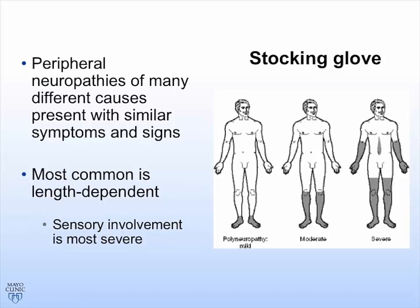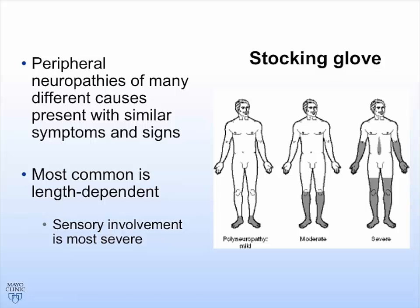Most common is length-dependent neuropathy affecting the longest nerves. If you've ever heard of stocking-glove sensory loss, that's because it involves the stockings first, and as it gets worse, then the glove and stocking. We say mild, moderate, and severe in terms of how much of the body surface is involved. In most neuropathies, sensory symptoms are the worst affected versus motor or strength, so most patients have either loss of sensation, painful sensations, or a combination more than motor weakness.